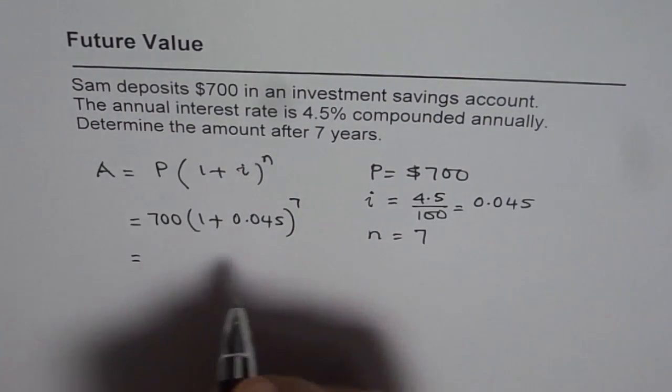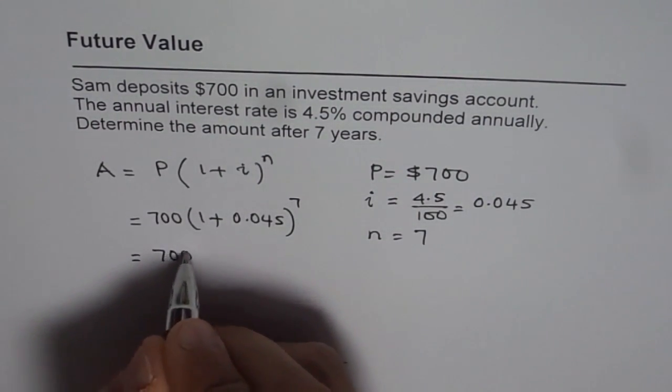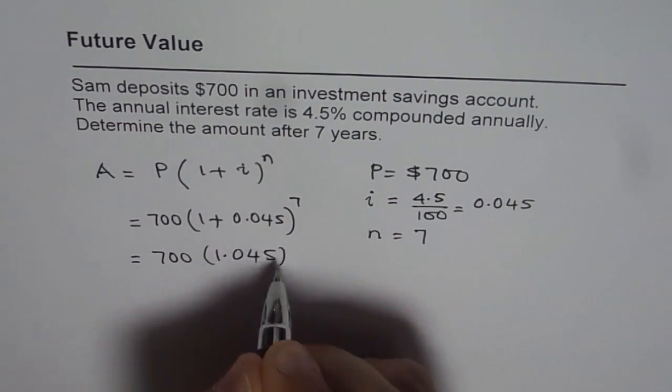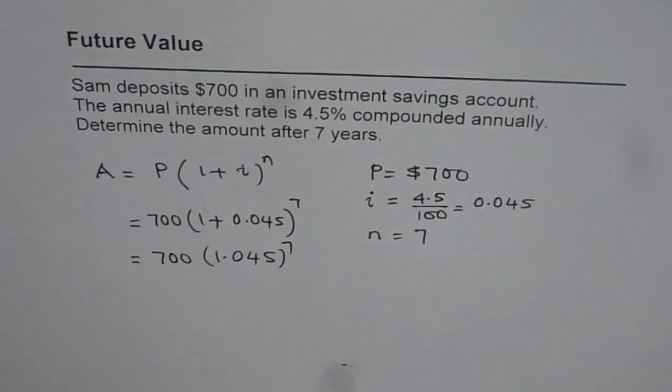Now we can use the calculator and calculate the answer. So it is 700 times 1.045 to the power of 7. It gives us 952.60.